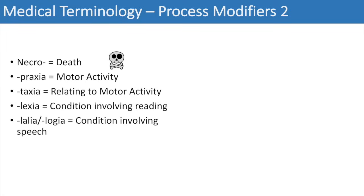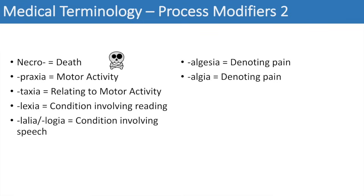These suffixes are used in describing conditions, usually involving psychological conditions. 'Algesia' denotes pain — analgesic or analgesia; 'an' represents lack, and 'algesia' represents pain, so lack of pain. An analgesic is something used to remove or reduce pain. 'Algea' also denotes pain — myalgia is muscle pain (myo for muscle, algea for pain), or cephalgia is head pain. All algea suffixes denote pain.